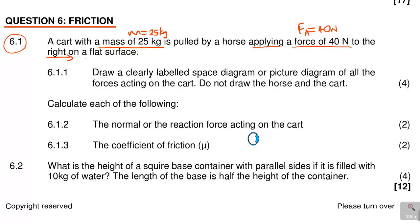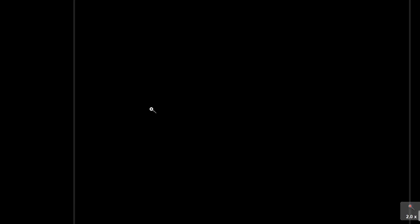Question 6.1.1 says: draw a clearly labelled space diagram or picture diagram of all the forces acting on the cart. Remember, it says do not draw the horse and the cart. Some students sketch the horse and cart, which is not relevant. Some call it a force diagram or a free body diagram, but here it is referred to as a space diagram. You need to label it clearly, and for that you get four marks.